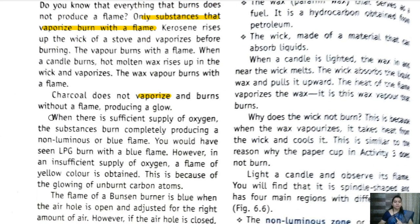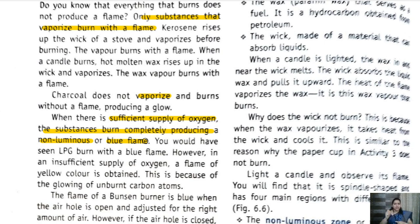When there is a sufficient supply of oxygen, the substance burns completely, producing a non-luminous or blue flame. Flame can be of two types: a blue flame — non-luminous zone — and a yellow flame — luminous zone. When there is a sufficient supply of oxygen, a blue colored flame appears, which is the non-luminous zone.